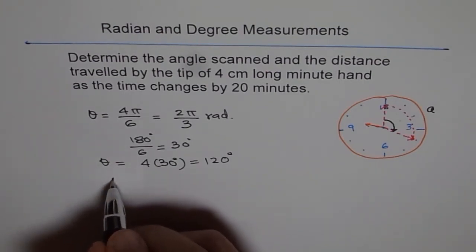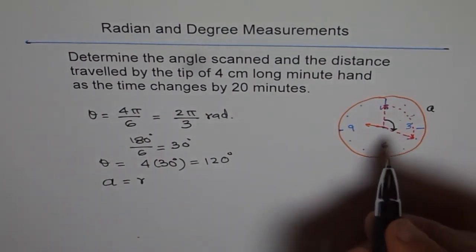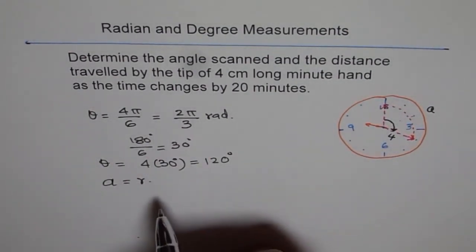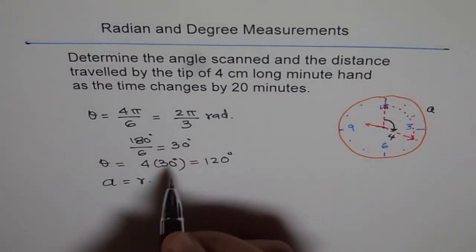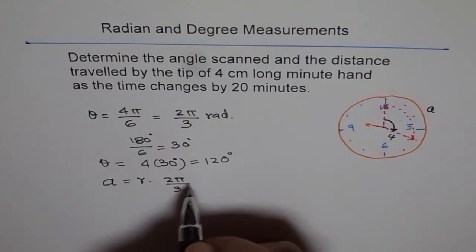So, arc length A equals to r, the radius, which is 4 centimeters. Times theta, the angle scan. So, angle scan, we should take radians, 2 pi by 3.